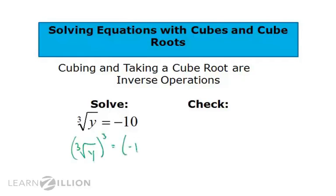So, we're going to cube both sides. Those undo each other. I'm left with y equals negative 10 to the third power, which means negative 10 times negative 10 times negative 10. The two negatives multiply to be a positive 100 times another negative 10 gives you negative 1,000. So, the answer to this problem is supposed to be negative 1,000.